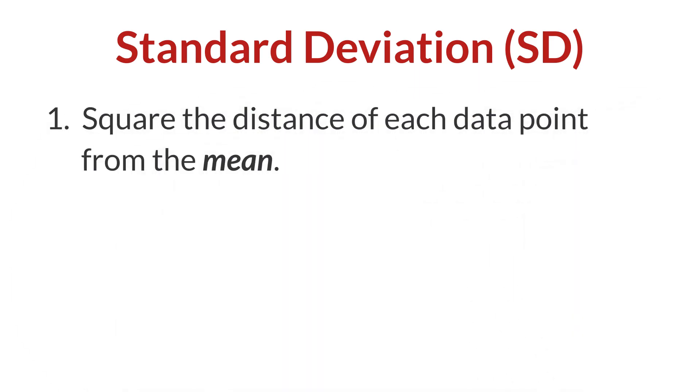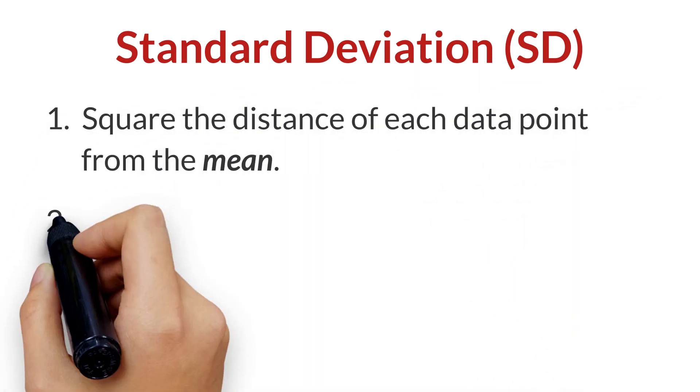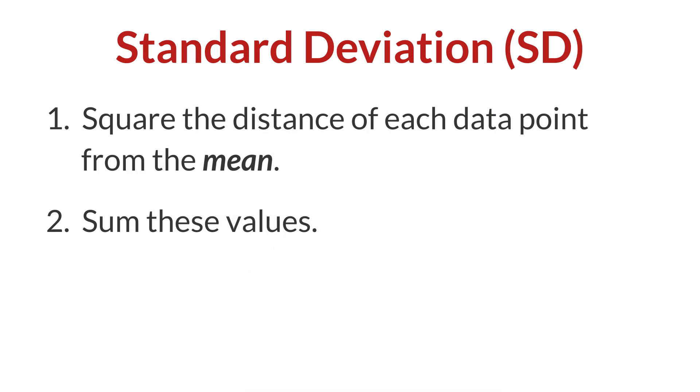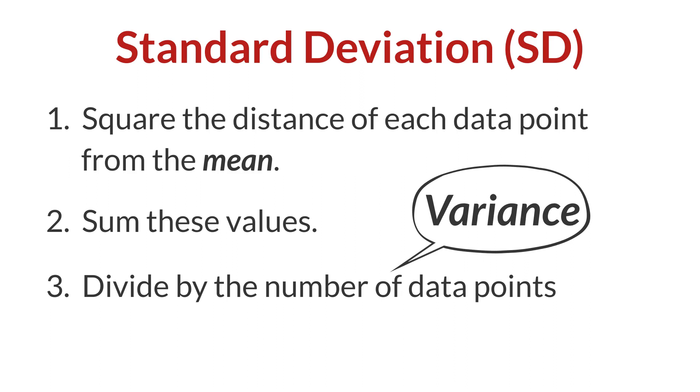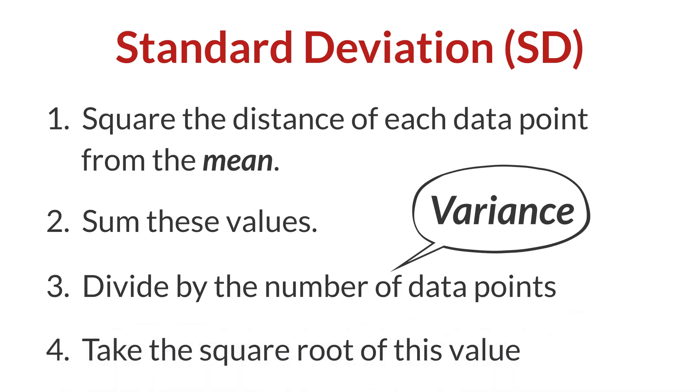The calculation method is: 1. Square the distance of each data point from the mean. 2. Sum these values. 3. Divide by the number of data points to find the variance. 4. Take the square root of this value to find the standard deviation.